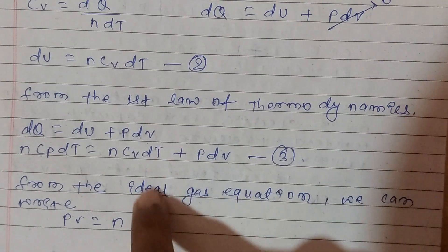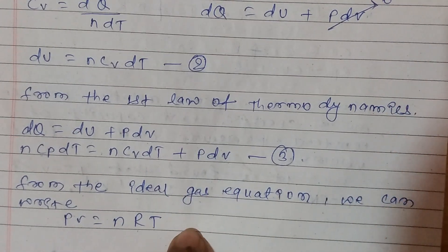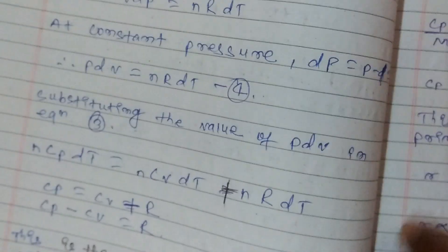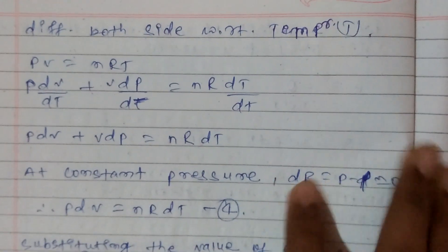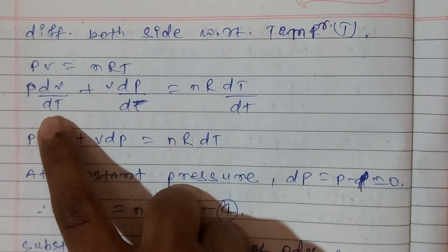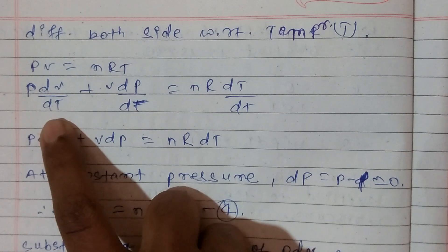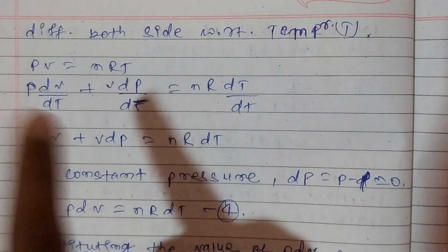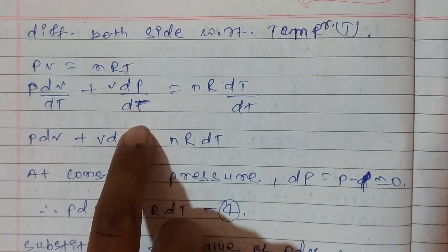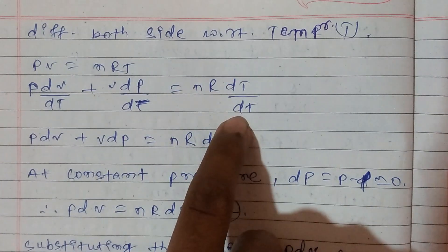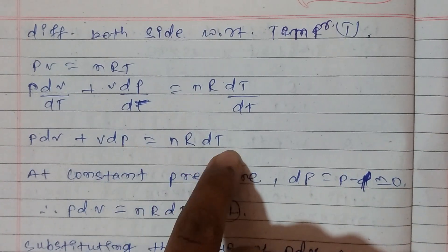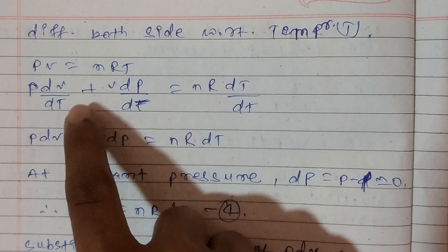Using the ideal gas equation PV equals NRT, we differentiate both sides with respect to temperature. So P dV upon dT plus V dP upon dT equals NR dT upon dT. After cancellation, P dV plus V dP equals NR dT. Therefore P dV equals NR dT.